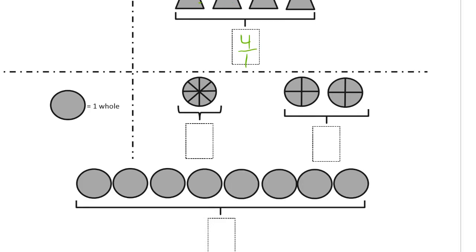So now a circle is a whole, and this is 1, 2, 3, 4, 5, 6, 7, 8 equal pieces, so this is 8 eighths shaded in.